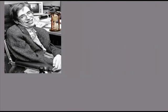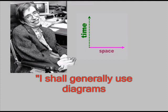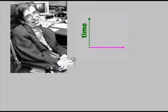Likewise, Hawking sees no problem when he casually replaces the dimension of height with time in what he calls a space-time diagram. He states: 'I shall generally use diagrams in which time increases upward and one of the spatial dimensions is shown horizontally.' Is it rational to substitute height with time? Does time run perpendicular to width?